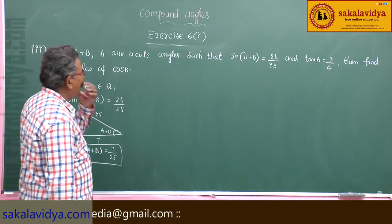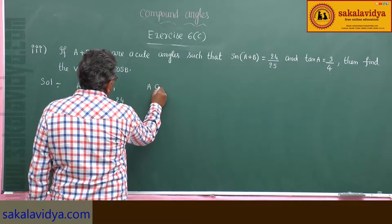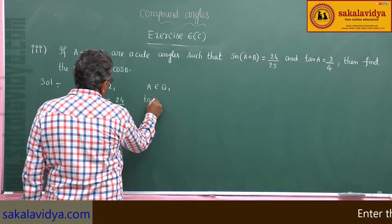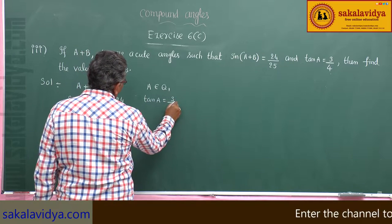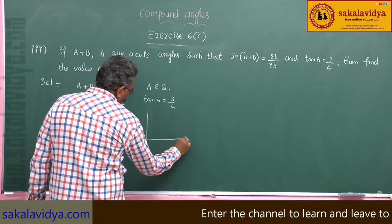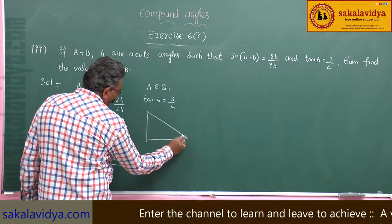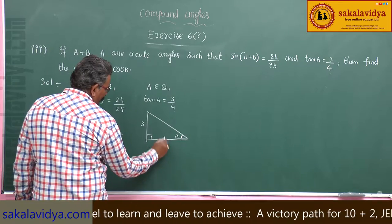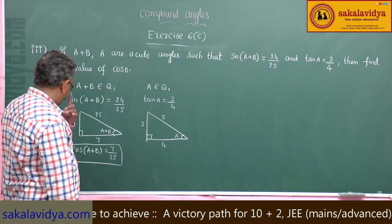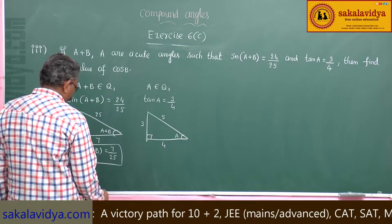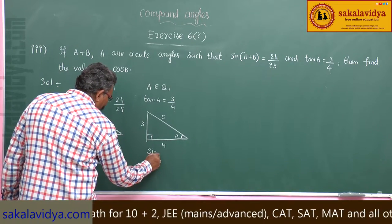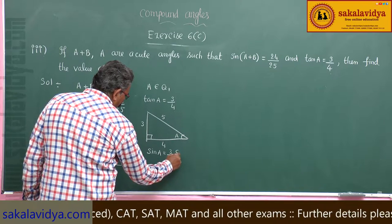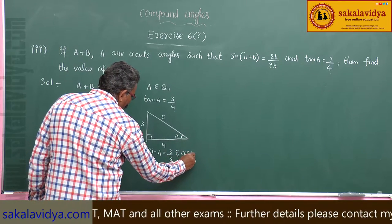A belongs to the first quadrant only, and tan A = 3/4. Taking the triangle, the opposite side is 3, the adjacent side is 4, and the hypotenuse is 5. So sin A = 3/5 and cos A = 4/5.